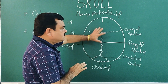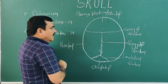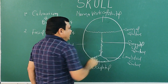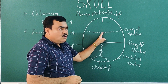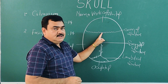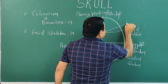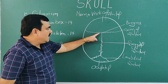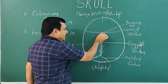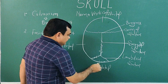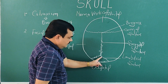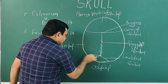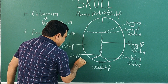The meeting point between the coronal suture and the sagittal suture is known as the bregma. The meeting point between the sagittal suture and the lambdoid suture is known as lambda.